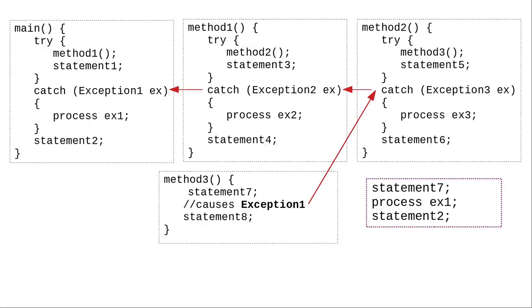In the event that method 3 does statement 7 and then throws an exception of type exception 1, method 3 terminates and throws the exception to method 2, which in turn has to throw the exception to its caller, method 1, which also terminates and throws the exception to main, which does handle the exception and executes statement 2.